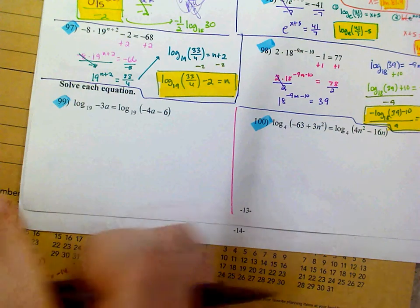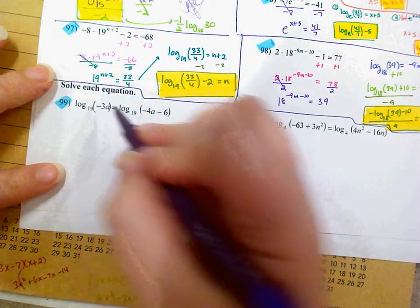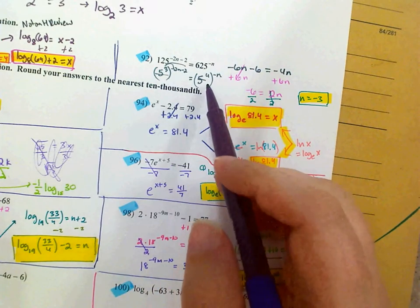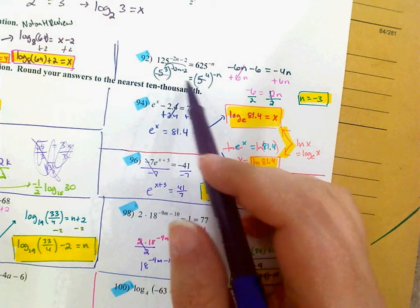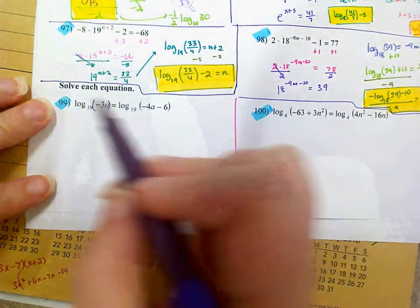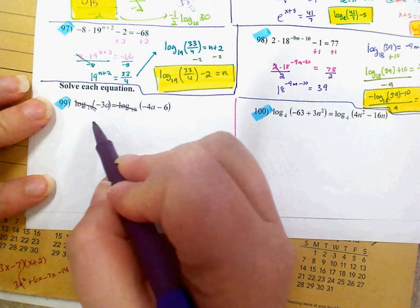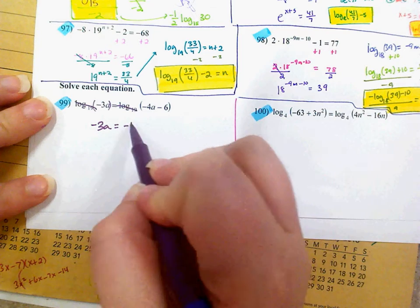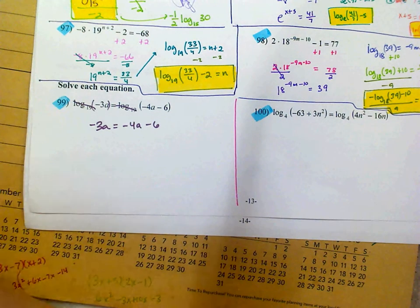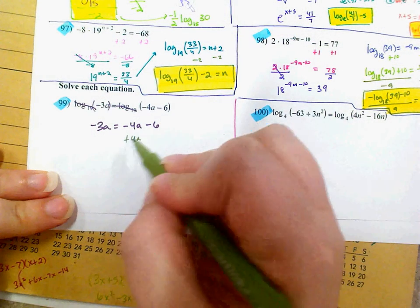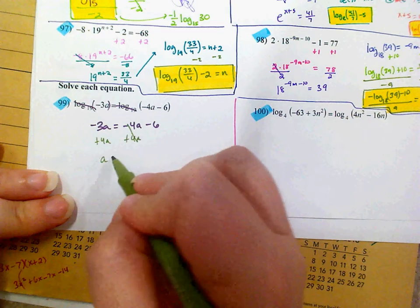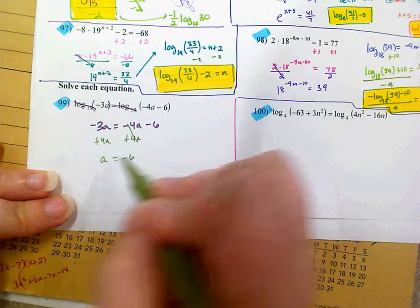When you have a logarithm equal to another logarithm — in the same way that when I had 5 to this equals 5 to that, the 5s were the same so I didn't need them anymore — if I have log of this equals log of that, I don't need them anymore. So I'm really just dealing with negative 3a equals negative 4a minus 6, and I just want to solve for a.